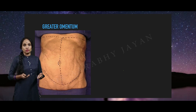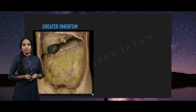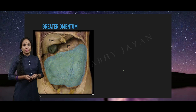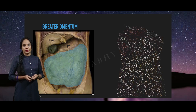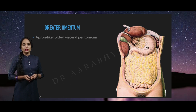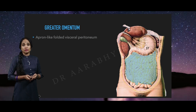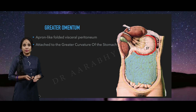Let's go into the greater omentum. When you open the abdominal cavity — this is a cadaveric pro-section series of photos — we place the incisions and open, and what we see is the greater omentum. Let's label it: that's the stomach and the liver, and this is the greater omentum, which is an apron-like fold of visceral peritoneum. That is what it looks like in a schematic diagram. The greater omentum starts off from the greater curvature of the stomach.